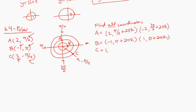And then for C, I could still use (3, -π/4 + 2πK). But also (-3, 3π/4).